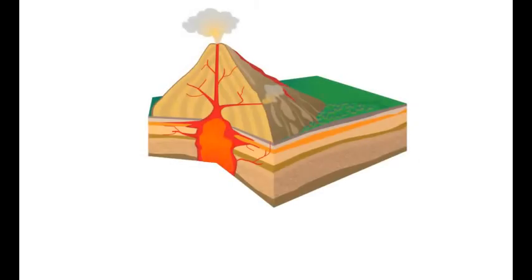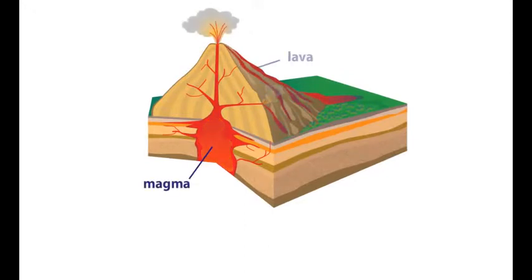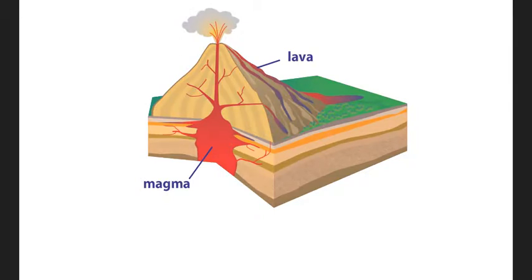Igneous rocks form from cooling magma and lava. They are classified according to their mineral origin, texture, and composition.